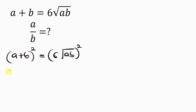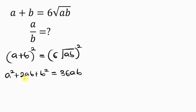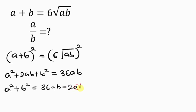The square of the left-hand side gives a squared plus 2ab plus b squared, equal to the right-hand side which gives 36 times ab. Our next step is to move 2ab to the right-hand side, so that I have a squared plus b squared on the left, equal to 36ab minus 2ab, which simplifies to 34ab.